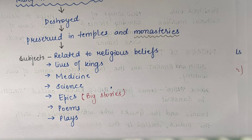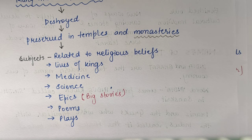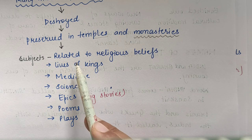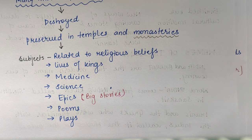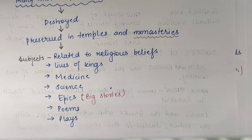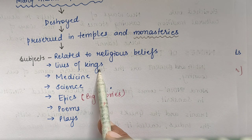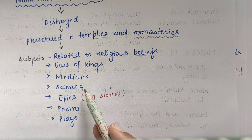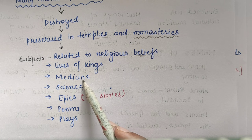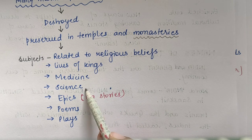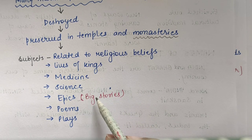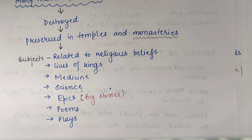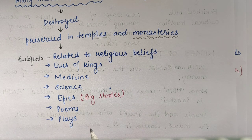But what was written on these manuscripts? Which subjects were written? This was related to religious beliefs — log jo dharm mein maante the, uske baare mein likhte the. Life of Kings — kings kaise rahte the, kaun se battles jite the. That was also mentioned. Medicines, science, epics — epics means big stories — manuscripts mein badi badi stories bhi likhi jaati thi. Poems and plays — these were the things written on manuscripts.